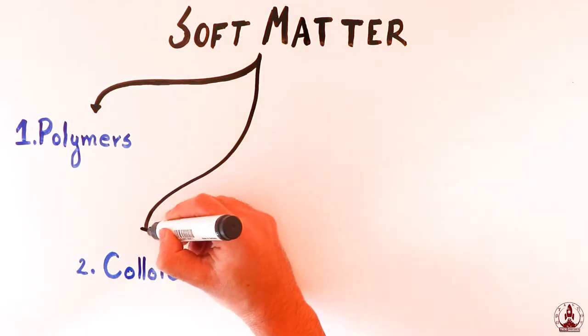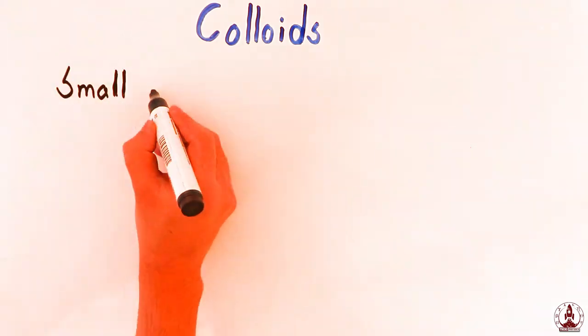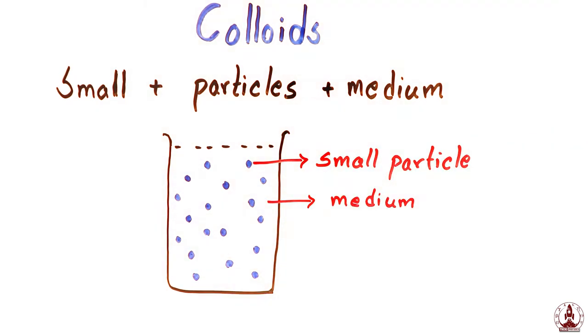This is the second video on soft matter physics focusing on colloids. Colloid is a mixture of small particles in a medium. Let's dissect this sentence one by one.